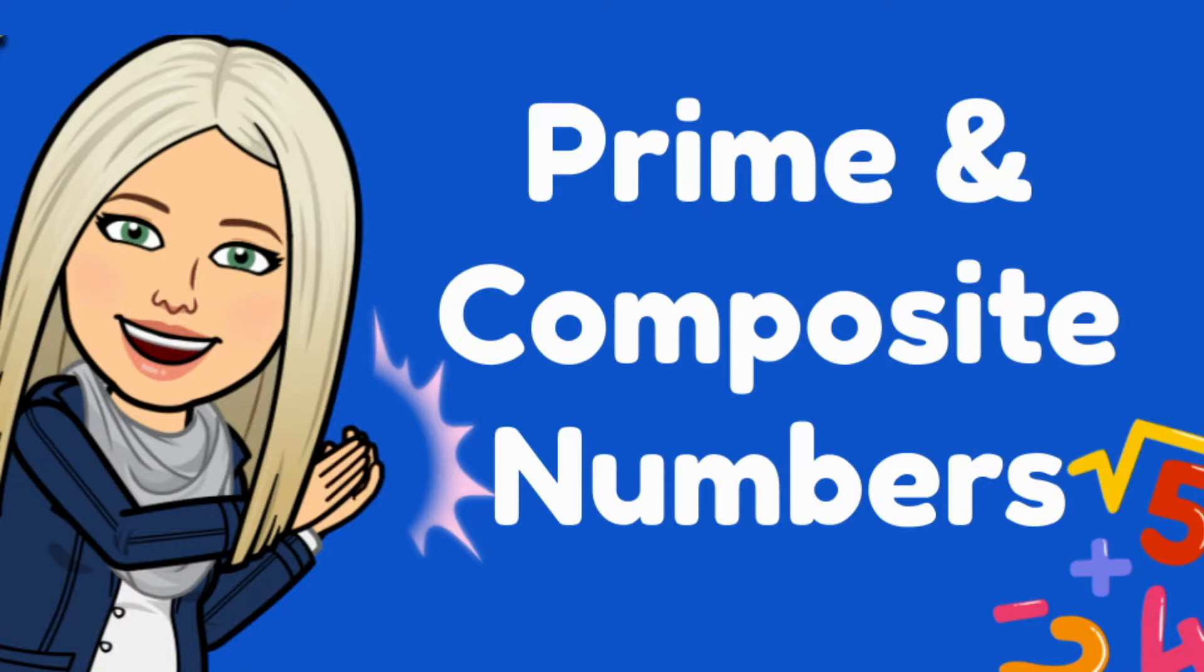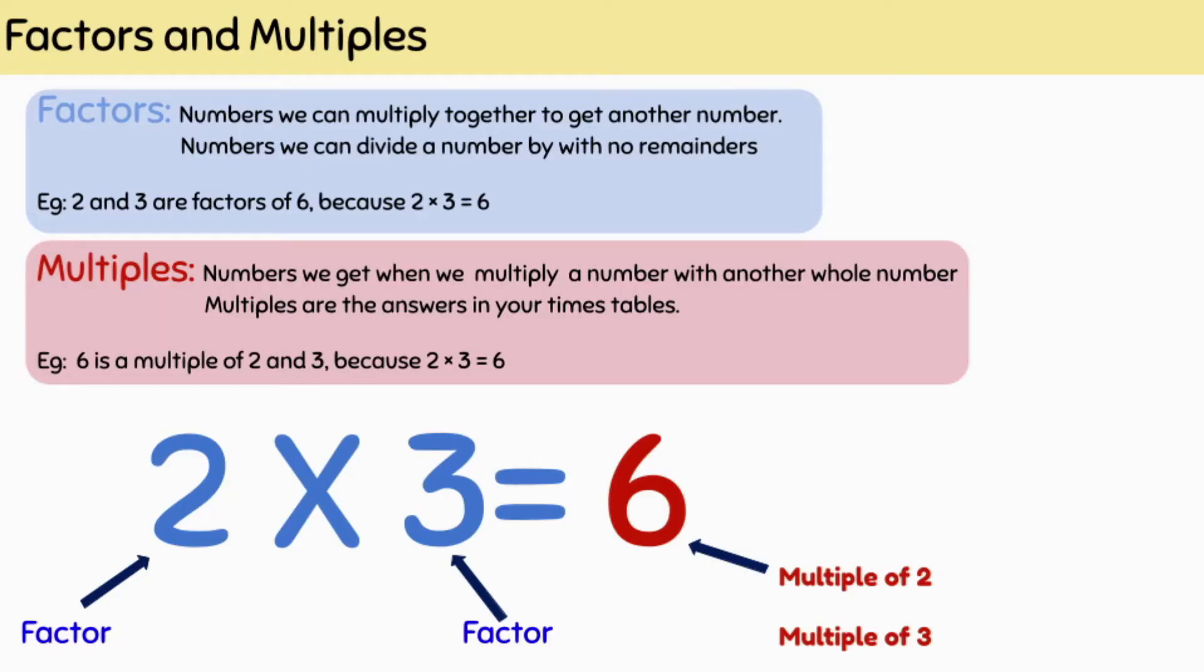Prime and Composite Numbers. Multiples are the numbers we get when we multiply a whole number with another whole number. Multiples are basically the answers to your times tables.